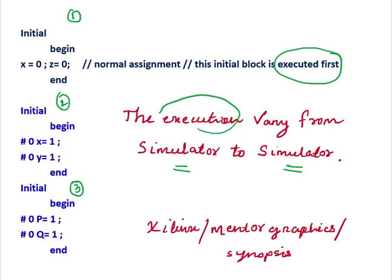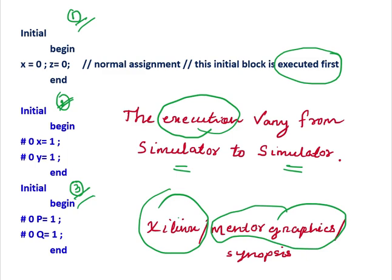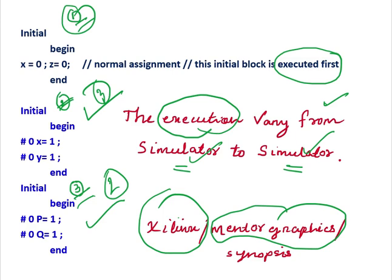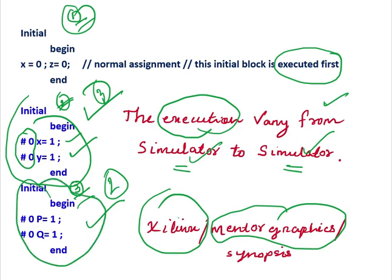This execution also varies from simulator to simulator. For example, if you are using the Xilinx simulator, first the first block executes — that is for sure — then let's say the third block executes. But if you use Mentor Graphics simulator, maybe after the first block, the second block executes instead. So it varies from simulator to simulator which block will be executed first. Including #0 cannot ensure which line or which block will be executed first among those with the delay. So there will always be a race around condition, and it depends on the simulator.